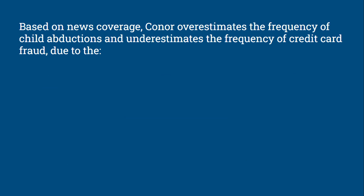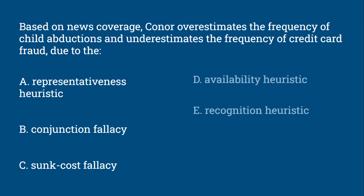Based on news coverage, Connor overestimates the frequency of child abductions and underestimates the frequency of credit card fraud due to the: representativeness heuristic, conjunction fallacy, sunk cost fallacy, availability heuristic, or recognition heuristic.